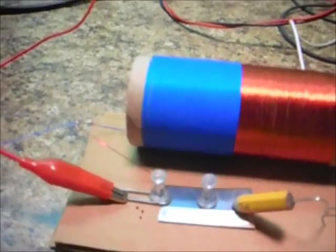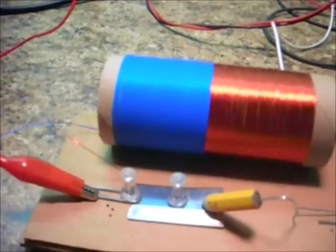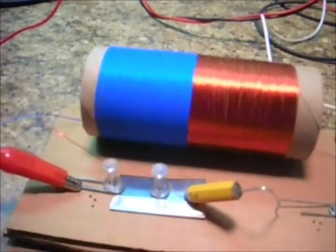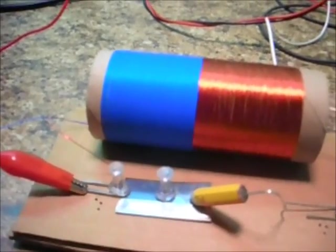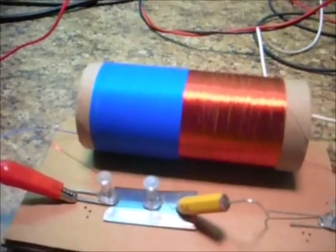I started out with the blue wire, the 30 gauge insulated wire, but I only had enough for about 70 wraps, 80 wraps. That wasn't enough.